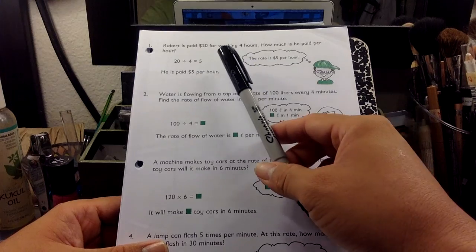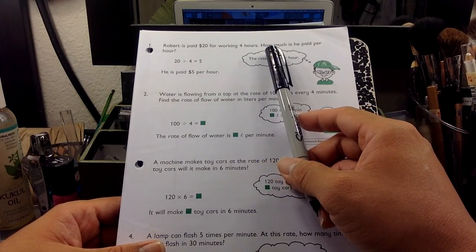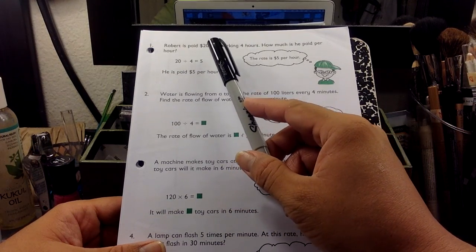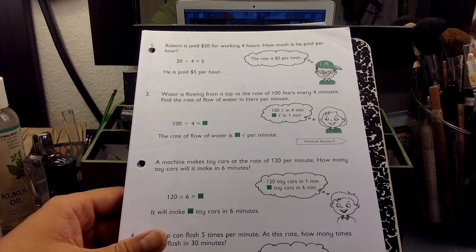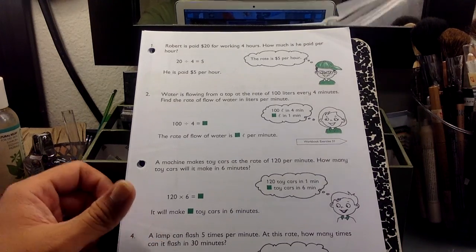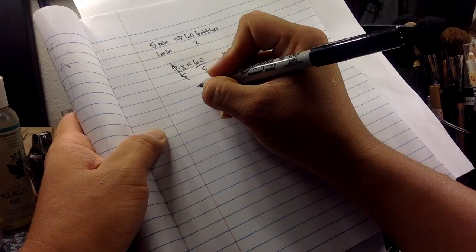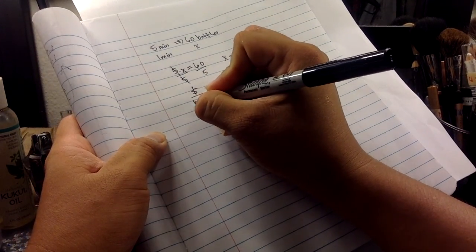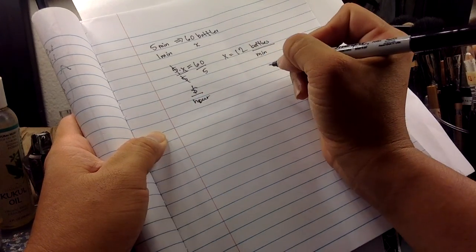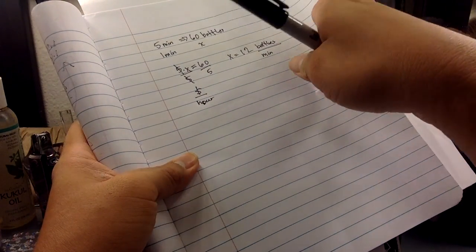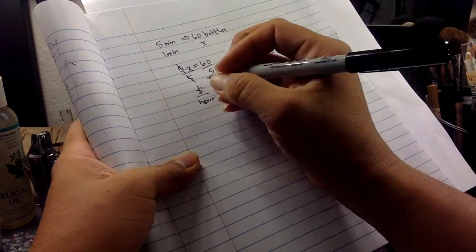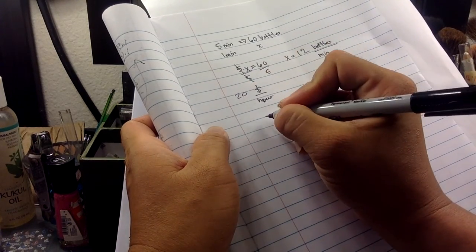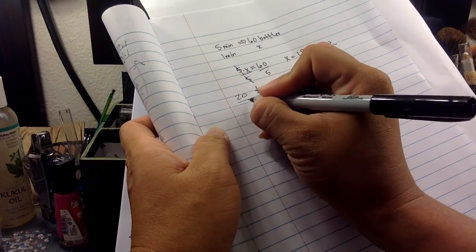Robert is paid $20 for four hours of work. How much is he paid per hour? So $20 per hour. I think that maybe the easy way to kind of think about this is you're trying to find dollars per hour. And the way you can go about doing that is how much money did he make all together? $20. And how many hours did he work? Four hours.